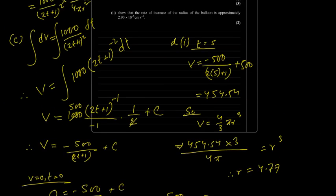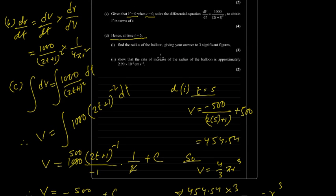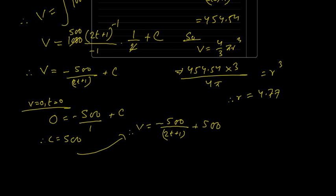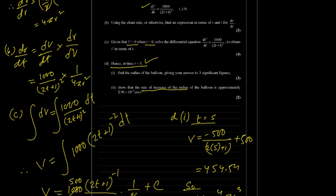The next one is, we have to find the value of the rate of increase. Rate means dt. So dr by dt, we know t equals 5. We know r equals 4.77. So we have this expression that we found before here, dr by dt. So put the value of t equals 5, put r equals 4.77, and it will be done. Let me do it here.